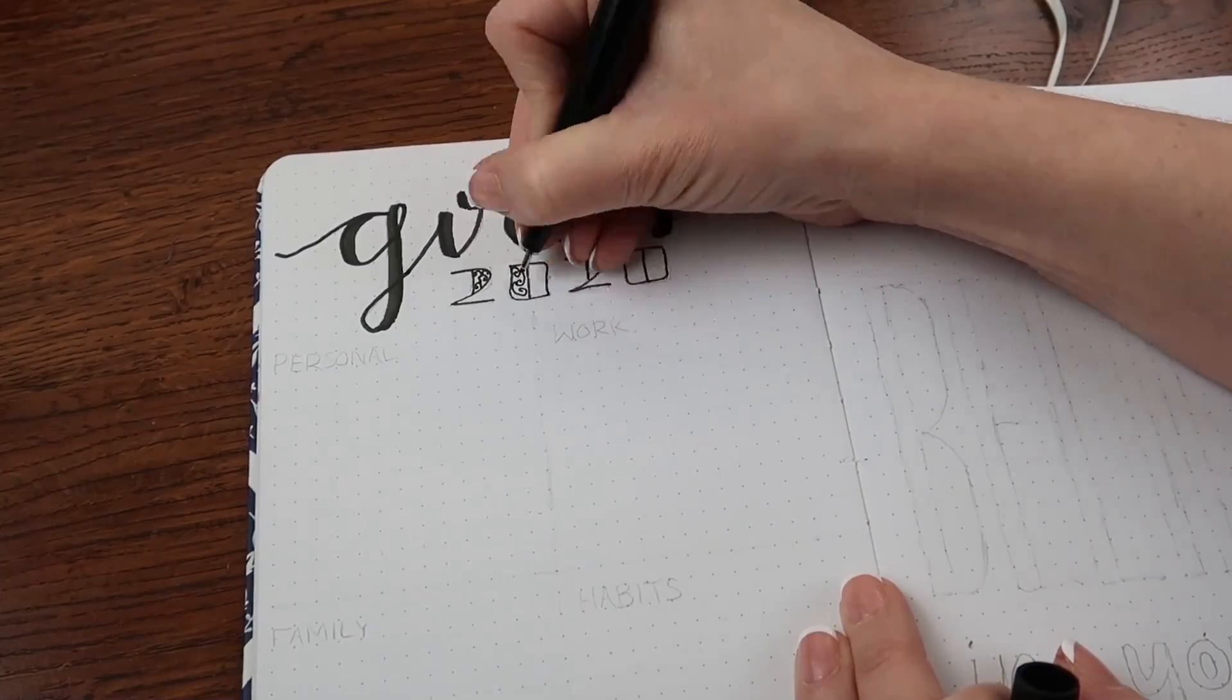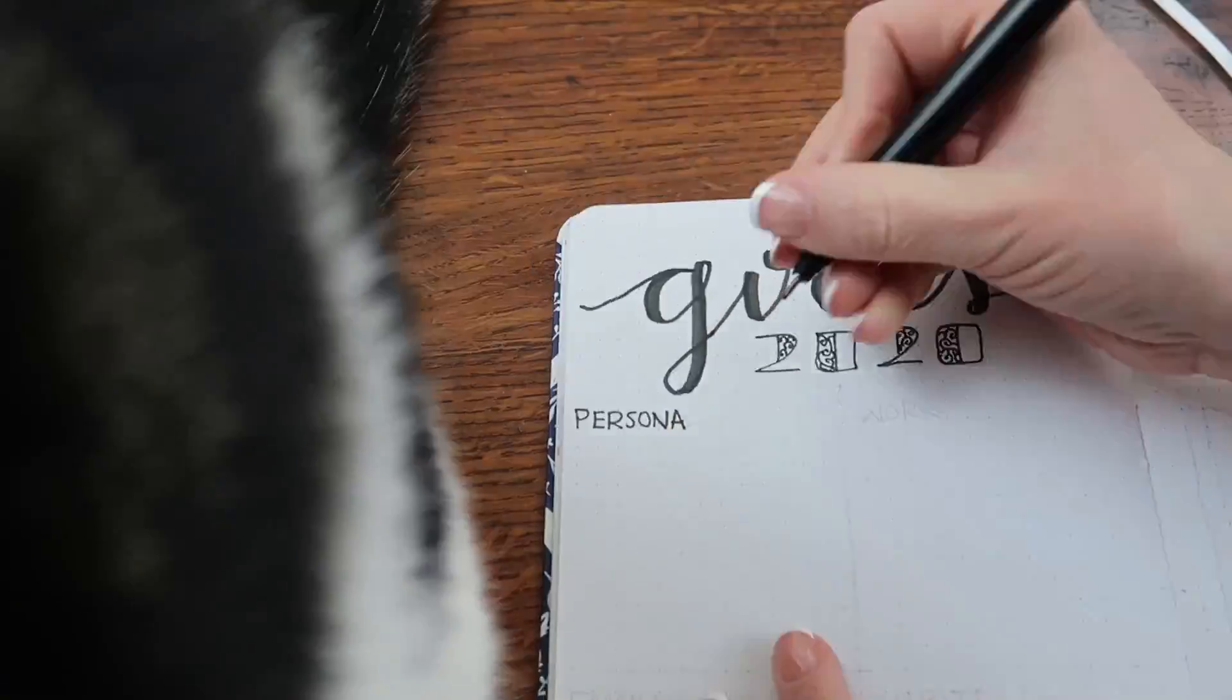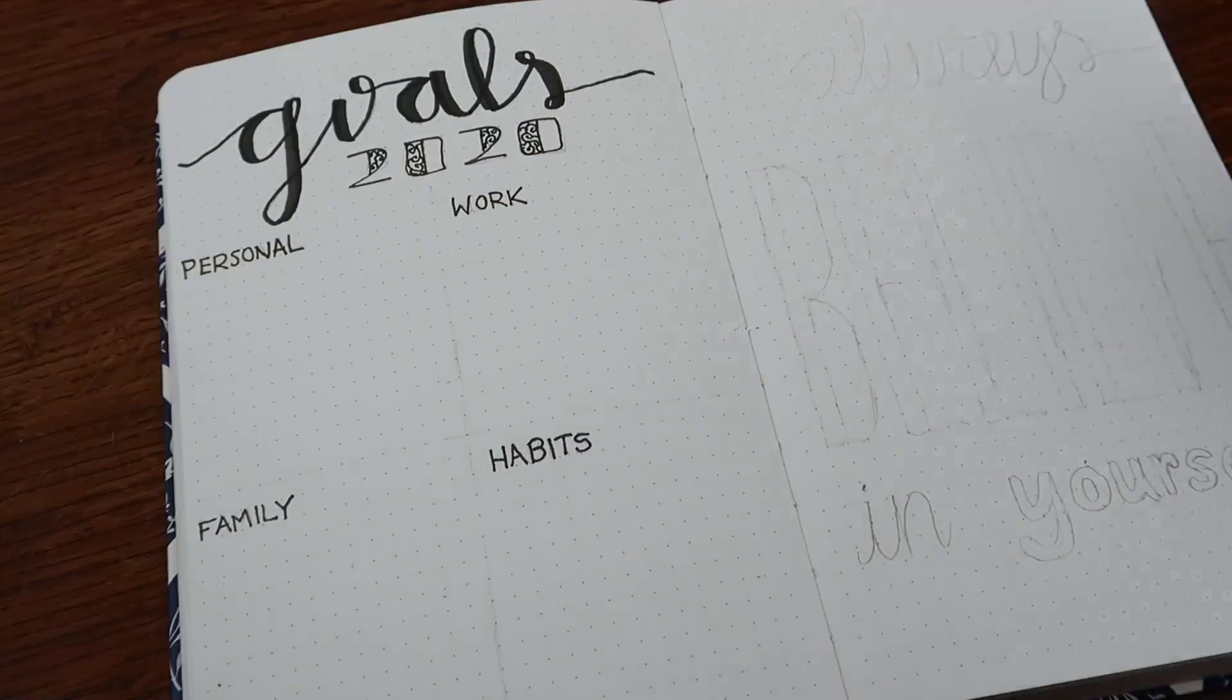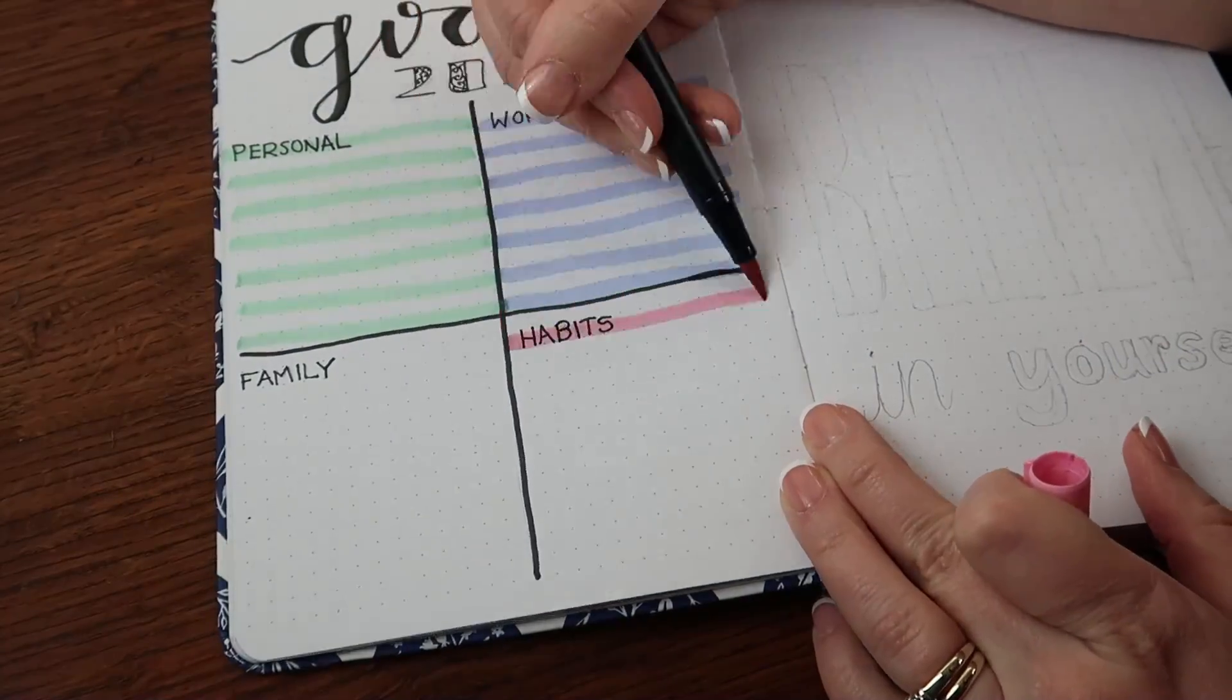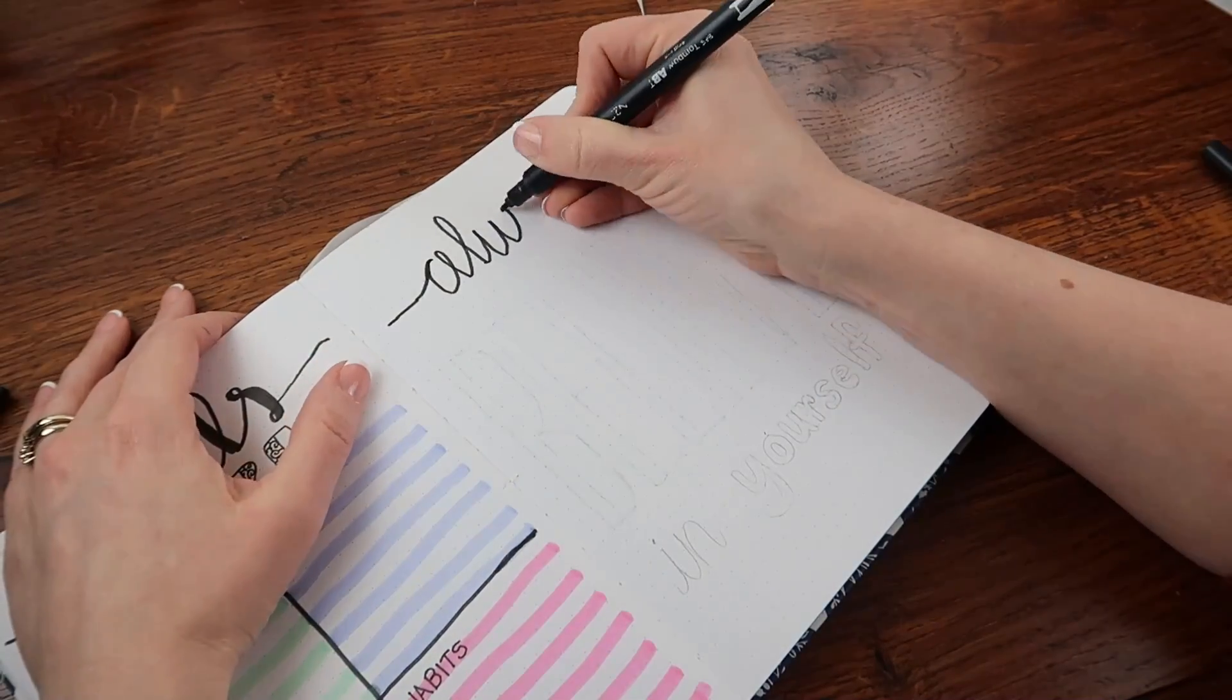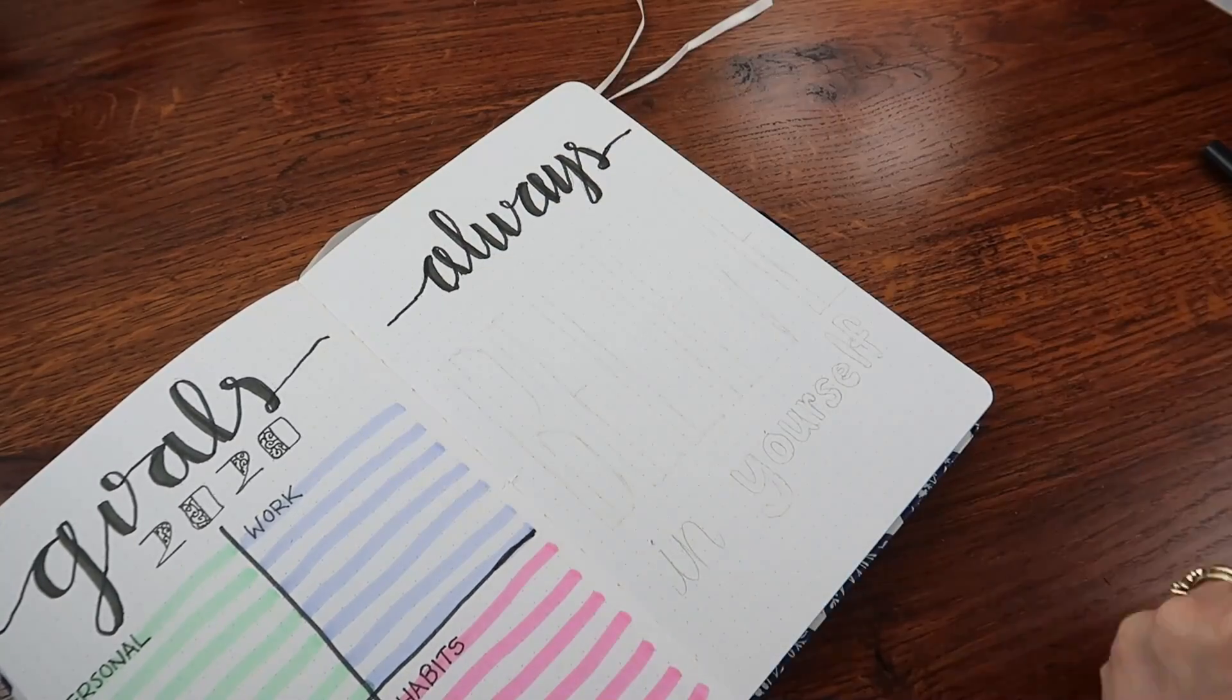And of course, I have to have a goals page because I make goals every single year. Whether I accomplish them or not is kind of, you know, hit or miss. But I still like to write them out because if I am to write them out, then it's more likely that I will achieve those goals. So for me, I put personal, work, family, and habits. I haven't written them down yet because I'm going to sit down and think about it and really put the things that I want to add.